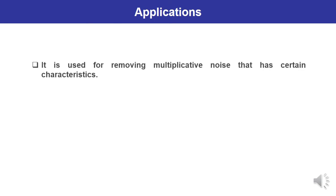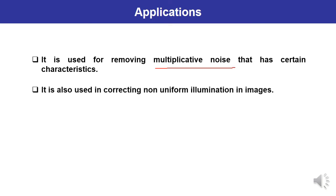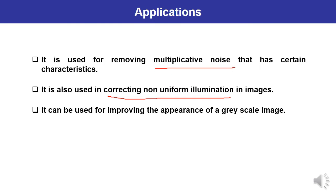Homomorphic filtering simultaneously normalizes brightness across the image and increases contrast as well. The application areas where homomorphic filtering can be applied include: removing multiplicative noise, correcting non-uniform illumination in images, and improving the appearance of grayscale. These are the major applications of homomorphic filtering.